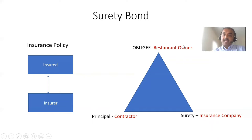If the contractor cannot fulfill his promises, the restaurant owner can file a claim for that particular surety bond. When they file a claim, it goes to the insurance company. So indirectly there is a contract between the insurance company and the contractor — that's the reason why we have three parties here.